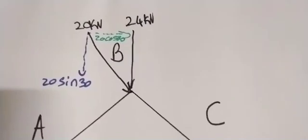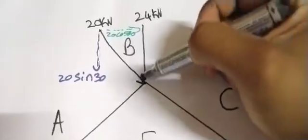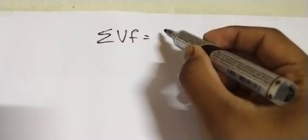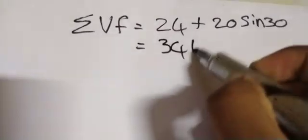At this point we're joining our two forces. We take the sum of the vertical forces at that point: we have the 24 kilonewtons going down, and then we add 20 sine of 30. So we've got 24 plus 20 sine of 30, and that gives us 34 kilonewtons.